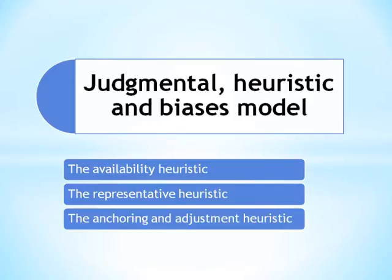The Representative Heuristic. This heuristic occurs when the probability of an outcome is predicted by the decision-maker based on previous experience. This type of bias creeps into decisions if the decision-maker compares the present situation with a previous happening. For example, the price of a newly launched product might be fixed high considering the success of an earlier product of the company.